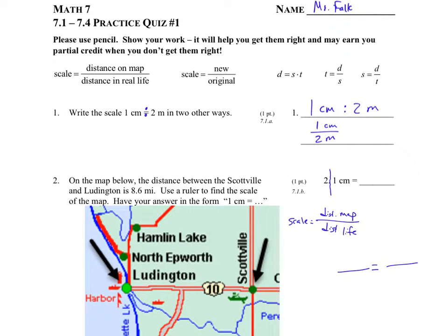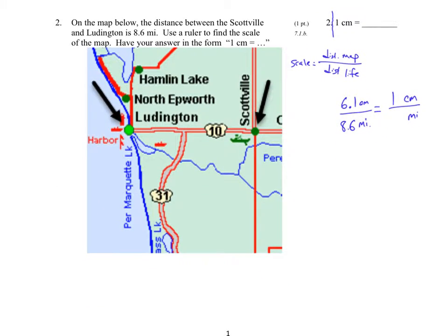Take out your ruler and put one dot on your ruler right there. I often go from right edge to right edge — I find that's a little bit easier to be accurate. You should come up with 6.1 centimeters, and I'd encourage you to be as accurate as you can. They tell us the real life distance is 8.6 miles, so we put that over 8.6 miles. Units on top will be centimeters, units on the bottom will be miles.